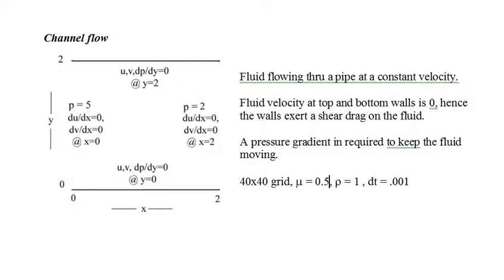The parameters for the simulation are: the grid is 40 by 40, mu is 0.5, and rho is 1. Here is an animated version of the output.